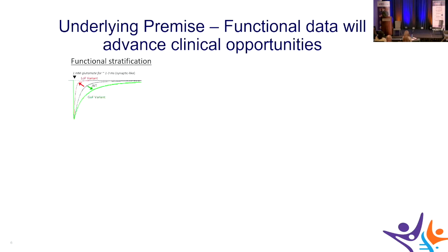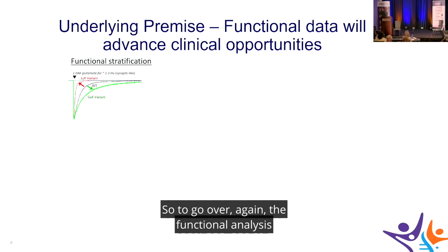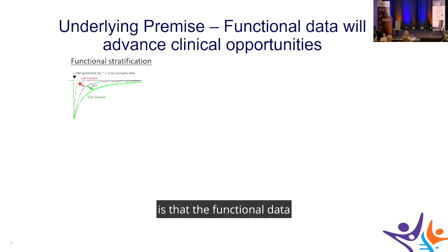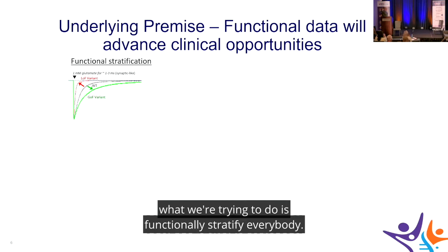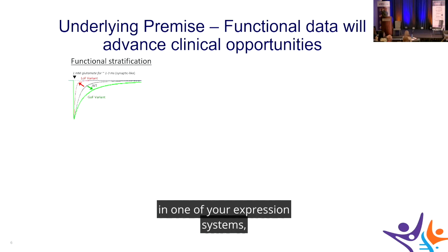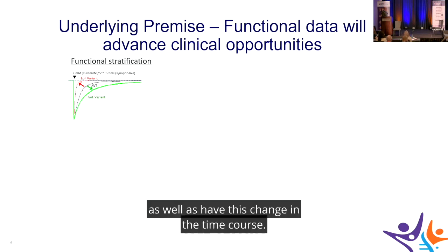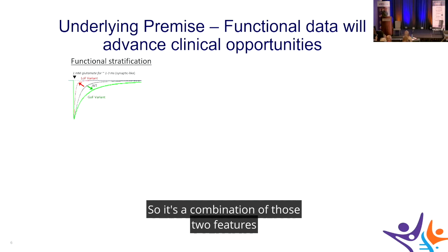The underlying premise of our functional analysis is that functional data will advance clinical opportunities. We're trying to functionally stratify everybody. When simulating synaptic current in an expression system with a mutant expressed, the wild-type current is the baseline. In a loss-of-function change it may be smaller, and in a gain-of-function it may be larger, with changes in the time course as well. It's the combination of amplitude and time course that determines whether something is gain or loss of function.